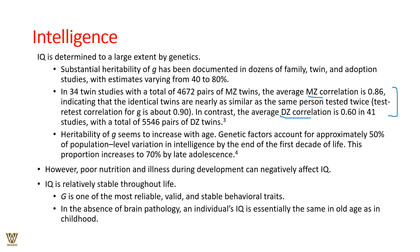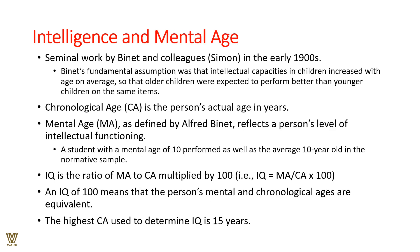G is one of the most reliable and stable behavioral traits; in the absence of brain pathology, an individual's IQ is essentially the same in old age as in childhood. Now, the distinction between chronological age and mental age: chronological age is your physical age, while mental age, as defined by Alfred Binet in the early 1900s, means a student performs as well as an average child of that age in a normative sample. IQ is the ratio of mental age to chronological age, multiplied by 100.